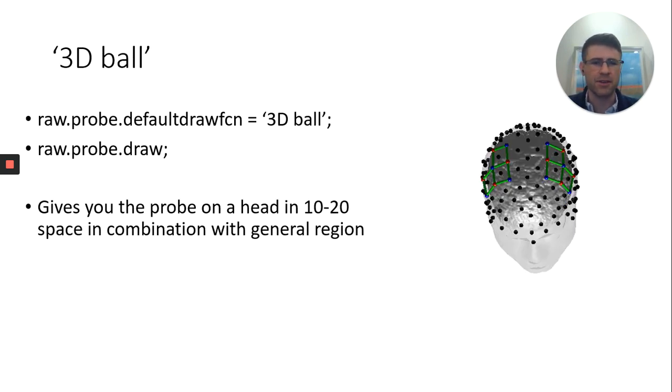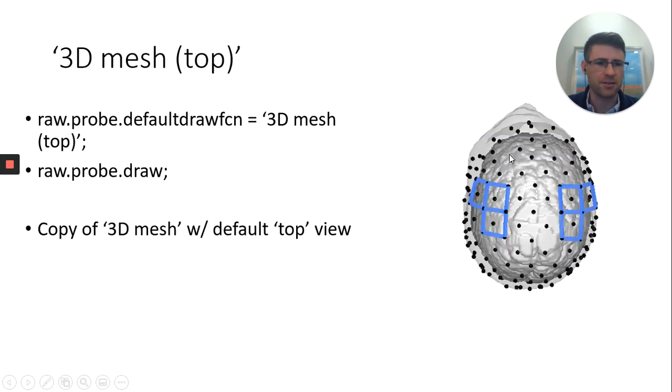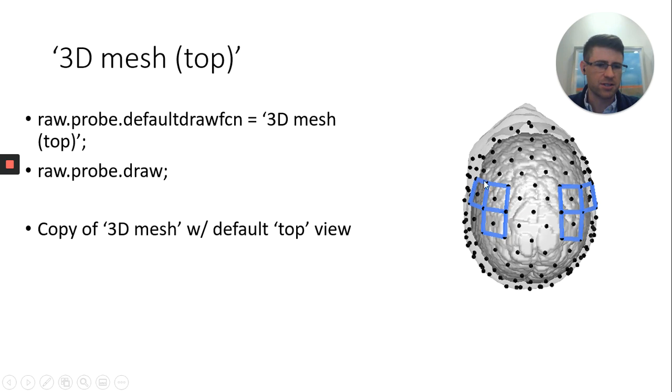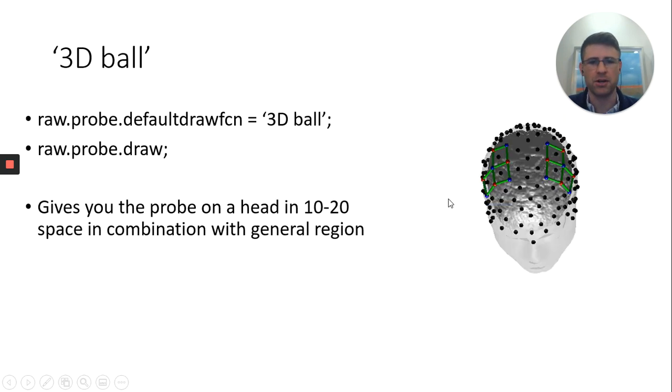And then you have the 3D ball. The 3D ball then, as you'll notice with these, if we back up, you don't know which is source and which is detector. You just see the channels. Whereas if we do 3D ball, you actually start to see red and blue dots. And these can actually be specified as source is red, blue is detector. And now you have a little bit more information there.